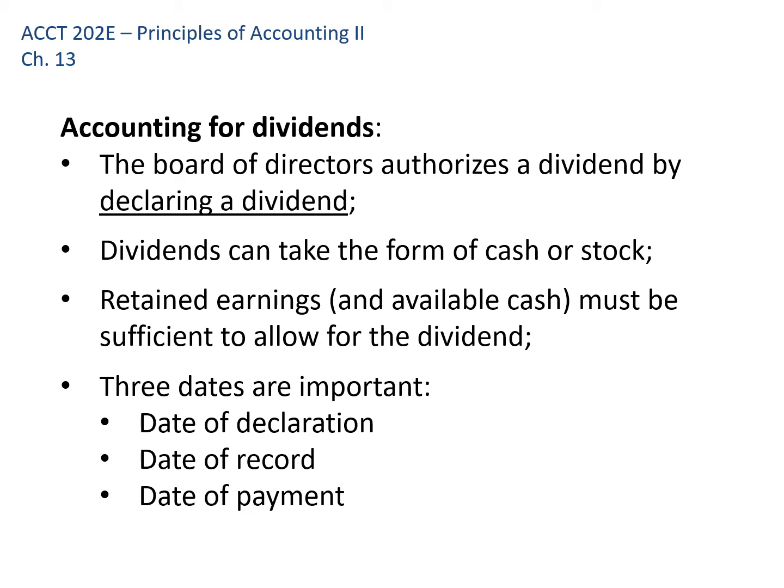Generally, companies pay dividends because shareholders elect the board of directors, who hire the CEO. The CEO wants to keep shareholders happy, so making sure share prices are going up and making sure shareholders are receiving dividends are two ways to do that. That starts with the board of directors authorizing payment of the dividend by declaring it.